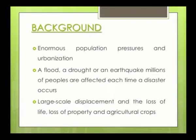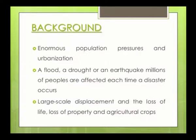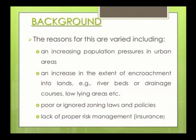Enormous population pressures and urbanization mean that during a flood, drought, or earthquake, millions of people are affected each time, depending on the frequency and concentration of the disaster and the area attacked. Large-scale displacement, loss of life, loss of property, and loss of agricultural crops result. The reasons are varied: increasing population pressure in urban areas, encroachment into riverbeds, drainage courses and low-lying areas, poor or ignored zoning laws, and lack of proper risk management or insurance.